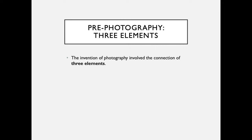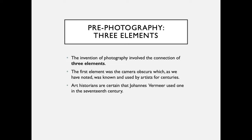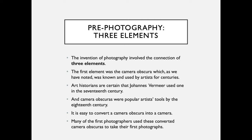Pre-photography: three elements. The invention of photography involved the connection of three elements. The first element was the camera obscura, which was known and used by artists for centuries. Art historians were certain that Johannes Vermeer used one in the 17th century, and camera obscuras were popular artist tools by the 18th century. It is easy to convert a camera obscura into a camera, and many of the first photographers used these converted camera obscuras to take their first photographs.